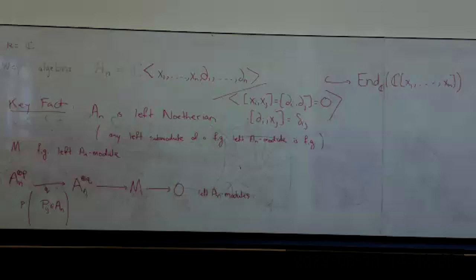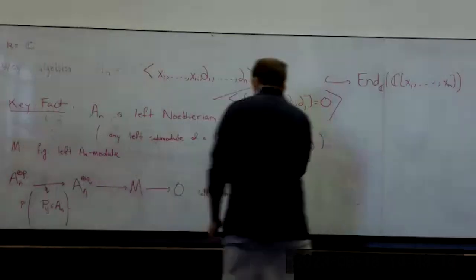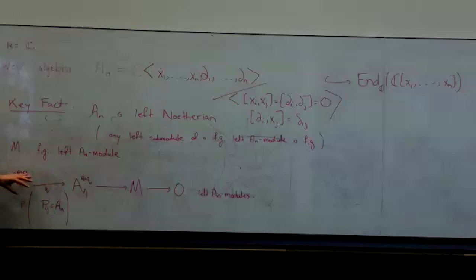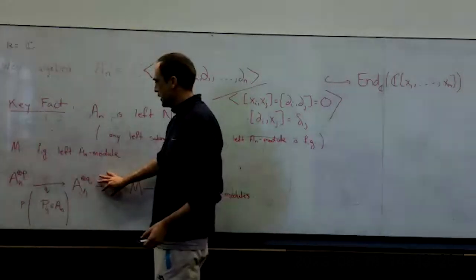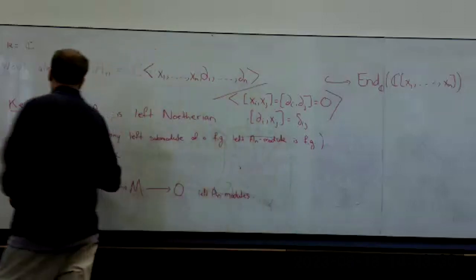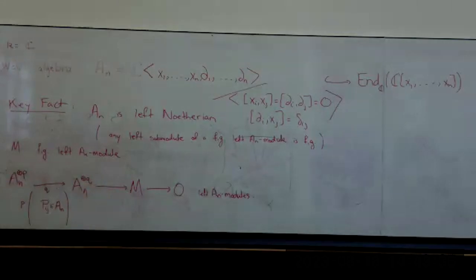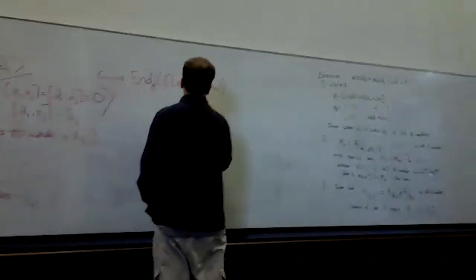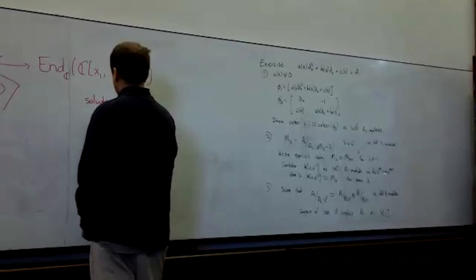The global story is a little bit different from the local one. This thing here was our system of differential equations. Conversely, I can start with a system of differential equations — which is this map — take a cokernel, and I get a left A_n module. But every left A_n module comes about in this way. And we have the solutions functor, which takes a module.